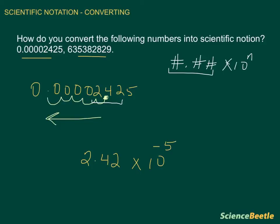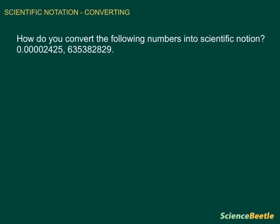If we go ahead and do the second number, we're going to do that now. So we'll write this number: 635,829. If you notice here, this is a very large number. Another way that we can determine whether the exponent is going to be positive or negative is: if the number is greater than one, it's going to be a positive exponent.